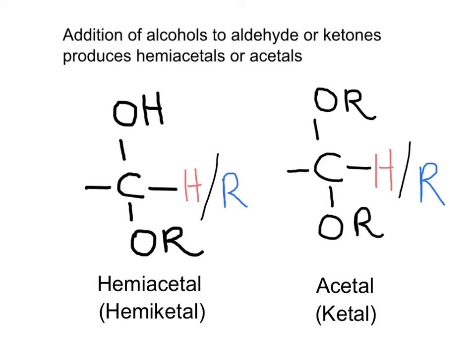In old nomenclature, there was a distinction by calling the compounds from aldehydes hemiacetals. If what was bonded to the carbonyl was a hydrogen, the name was hemiacetal. But if the carbonyl compound was a ketone — in other words, R-R carbonyl — then the product was called a hemiketal. In the same way, if the acetal was coming from an aldehyde, it was called an acetal, and if it was from a ketone, it was called a ketal. These days, there is no distinction, and both products from aldehydes and ketones are named as hemiacetals and acetals.